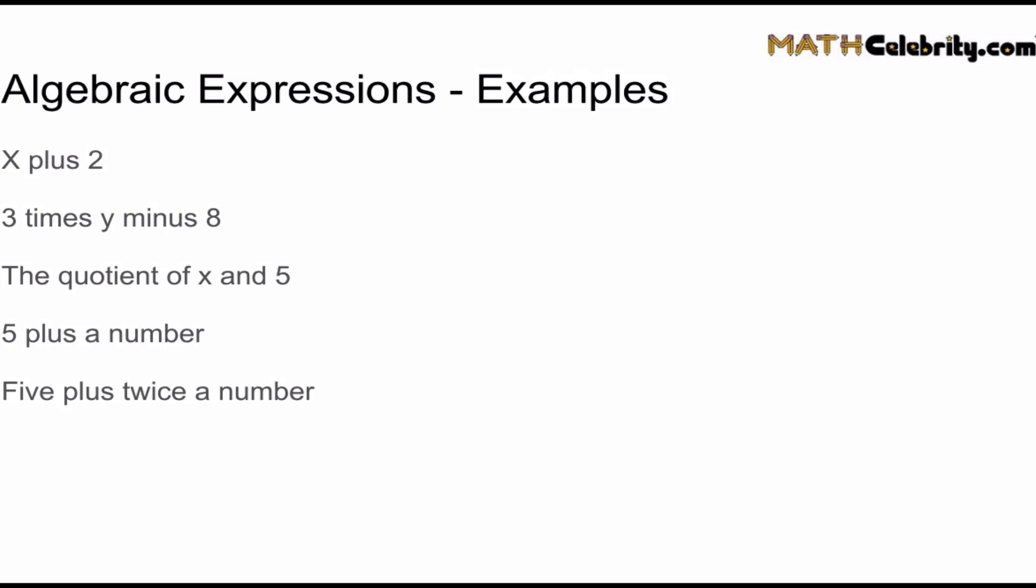But look at the fourth and the fifth algebraic expression. What's the variable? When they say a number, it means an arbitrary variable. Basically that means you choose what variable you want to use.